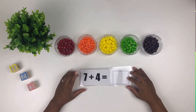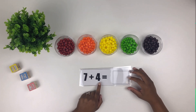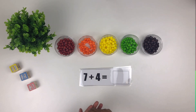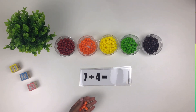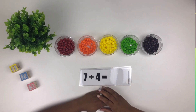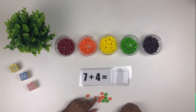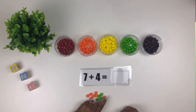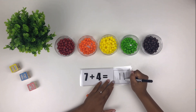Our next problem, seven plus four. We're going to take seven orange Skittles and four green Skittles. Now we count one, two, three, four, five, six, seven, eight, nine, ten, eleven. So seven plus four equals eleven.